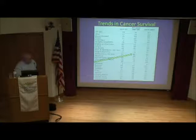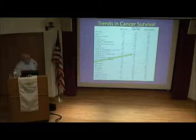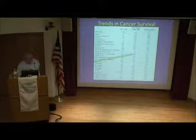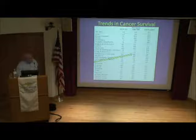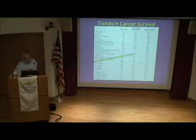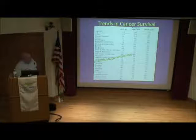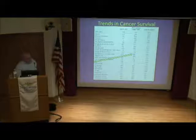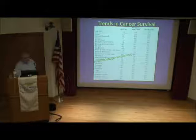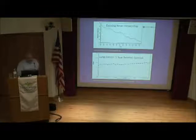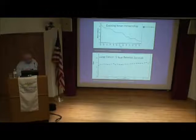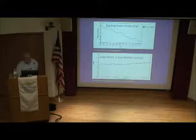Contrast that with other cancers: breast cancer five-year survival is 90%, prostate cancer close to 100%. Over the last 30 years, many cancers have seen significant improvements in mortality—colon cancer up almost 15%—while lung cancer has improved only about 2%. The lung cancer survival rate has essentially not changed, even as nightly news viewership dropped from 55 million in 1980 to roughly 3 million today.